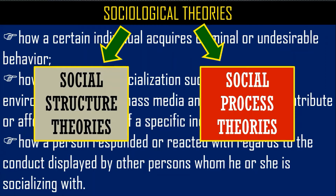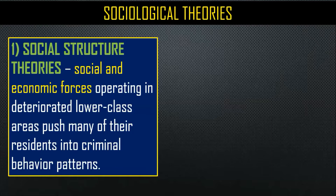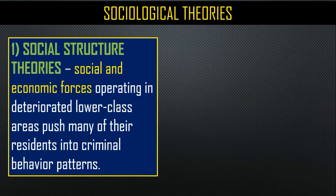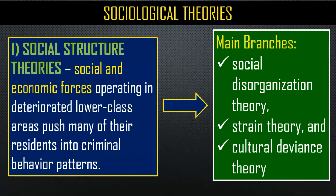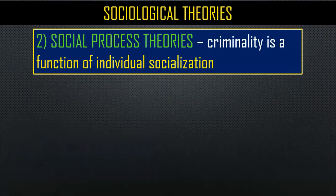We can divide sociological theories into social structure theories and social process theories. Social structure theories refer to the government, companies, schools, and any social organizations — whether church, government, or non-government organizations. We talk about social and economic forces operating in deteriorated lower-class areas that may push many residents into criminal behavior patterns. The main branches of social structure theories are the social disorganization theory, the strain theory, and the cultural deviance theory.